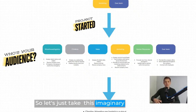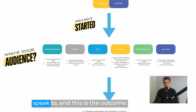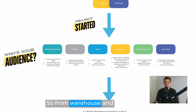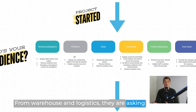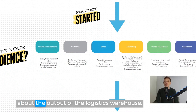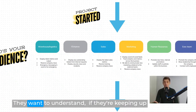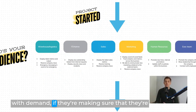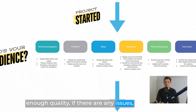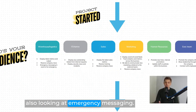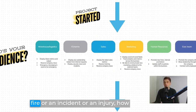So for this imaginary company: from warehouse and logistics, they are asking to display metrics — information about the output of the logistics warehouse. They want to understand if they're keeping up with demand, getting things out the door quickly, maintaining quality, and flagging any issues. They also want to receive company news to stay up to date. And they're looking at emergency messaging — so if there's a fire, incident, or injury, how can they communicate that better?